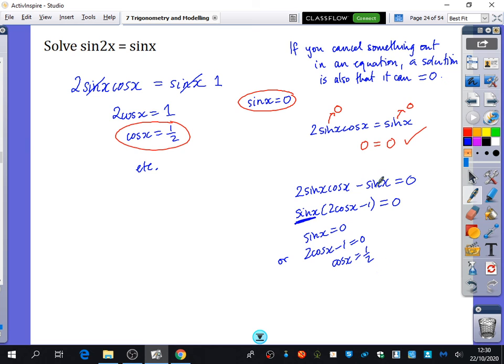So there's either the factorizing technique that will make sure you get all of the solutions, or there's the technique that if you just cancel it, you need to make sure that the thing you've cancelled could be equal to 0.